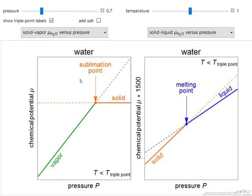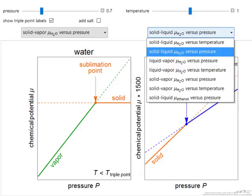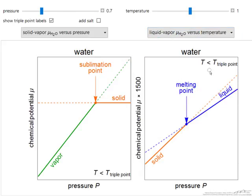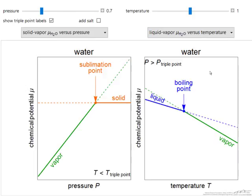So we have options to pick, for example, solid vapor, and notice the rather dramatic difference in slope between the solid and the vapor. This is because vapor has much larger volume than solid. Over here we could look at liquid vapor as a function of temperature. Again at high temperature vapor is the stable phase, at low temperature liquid is the stable phase.